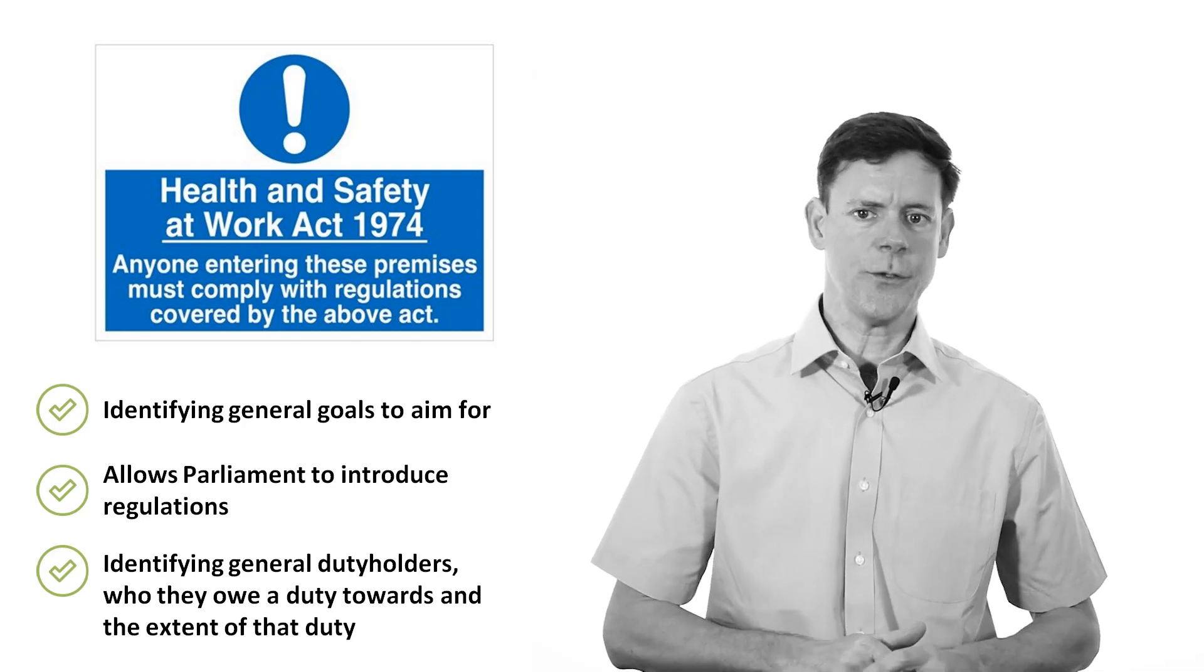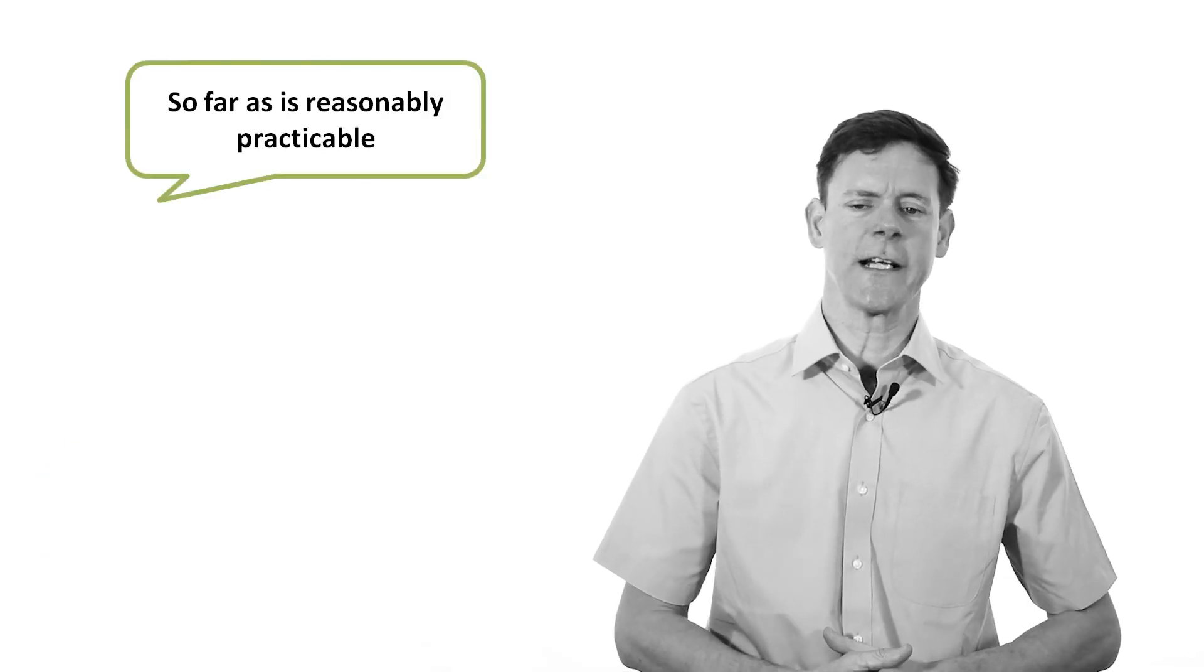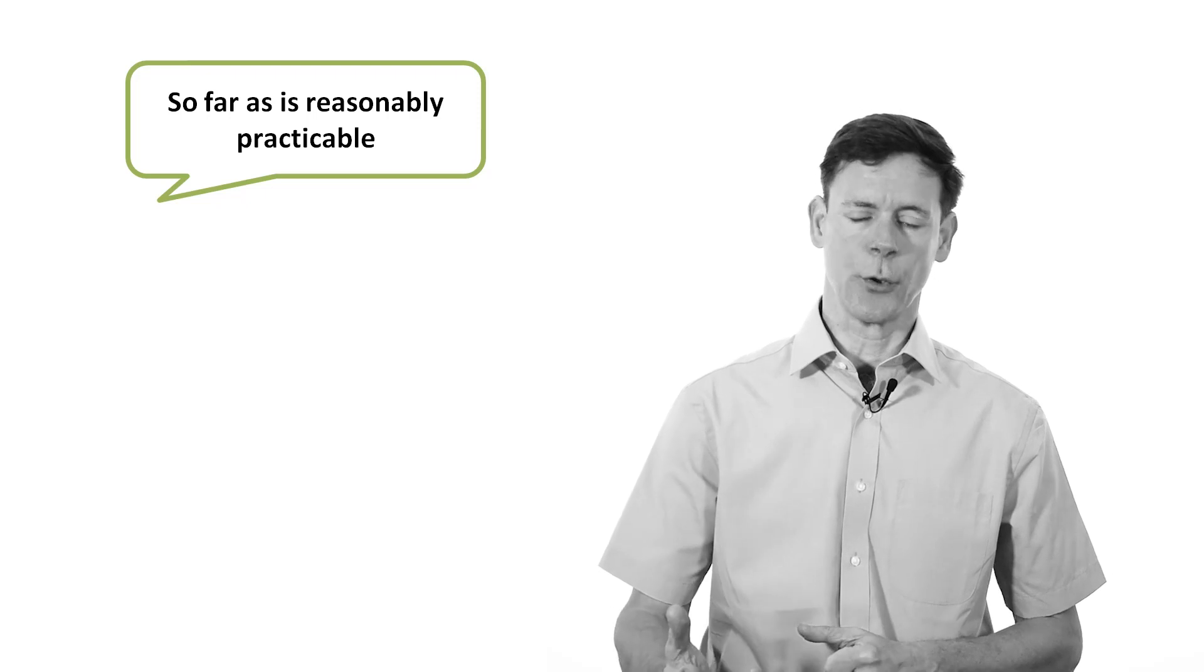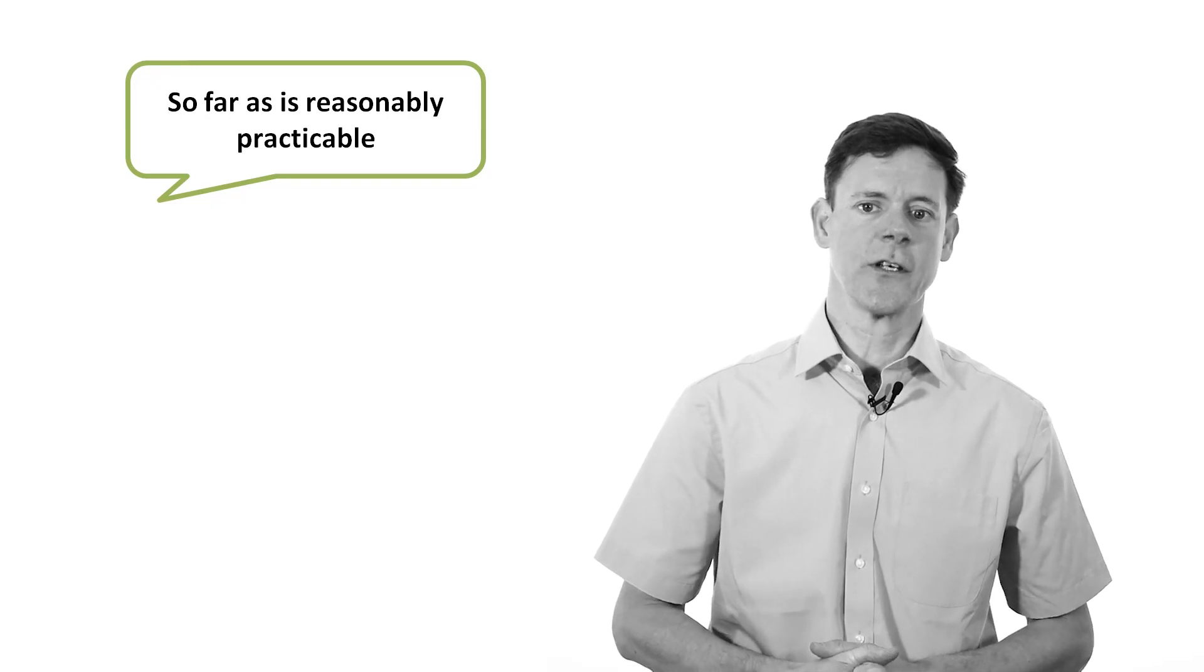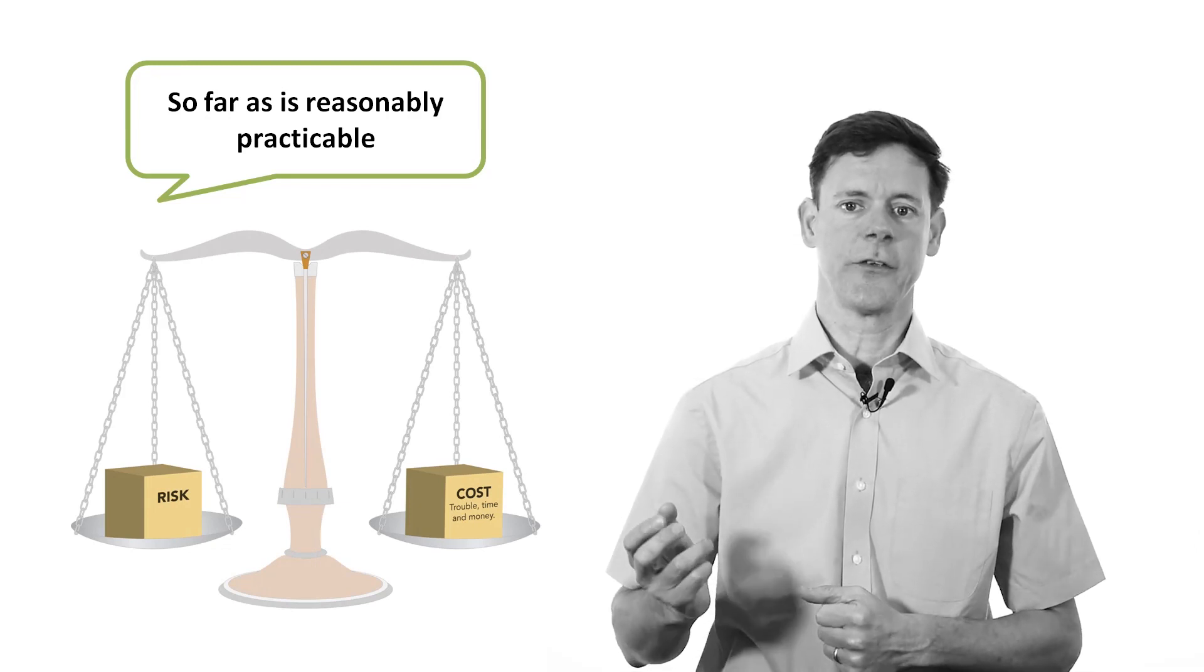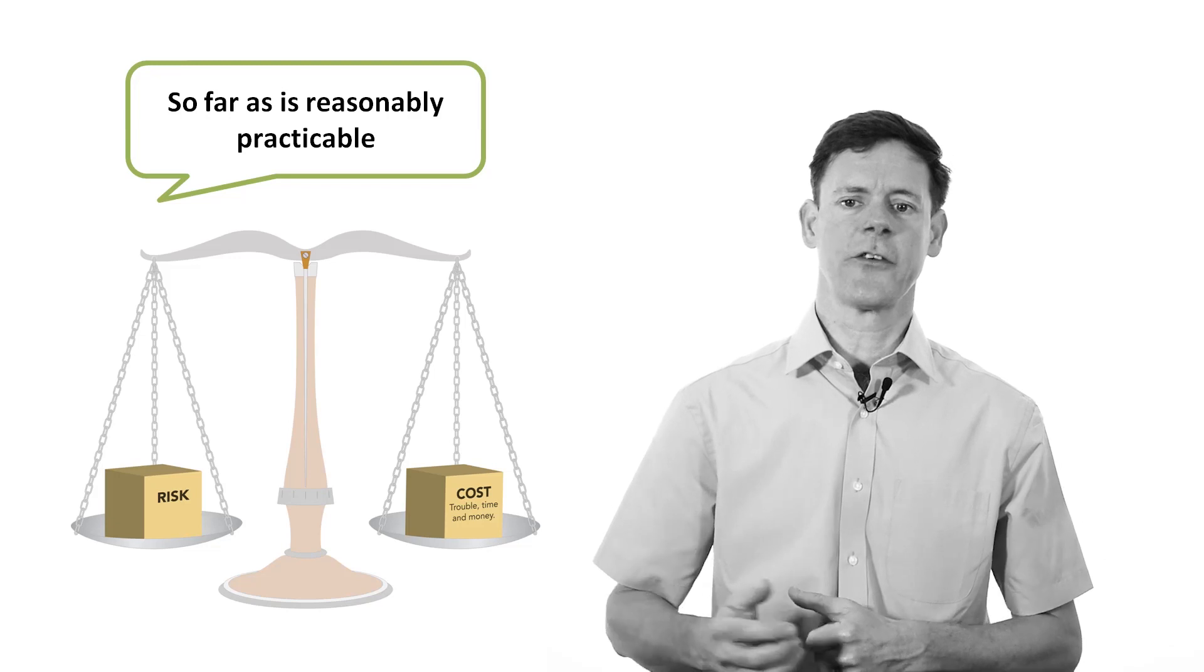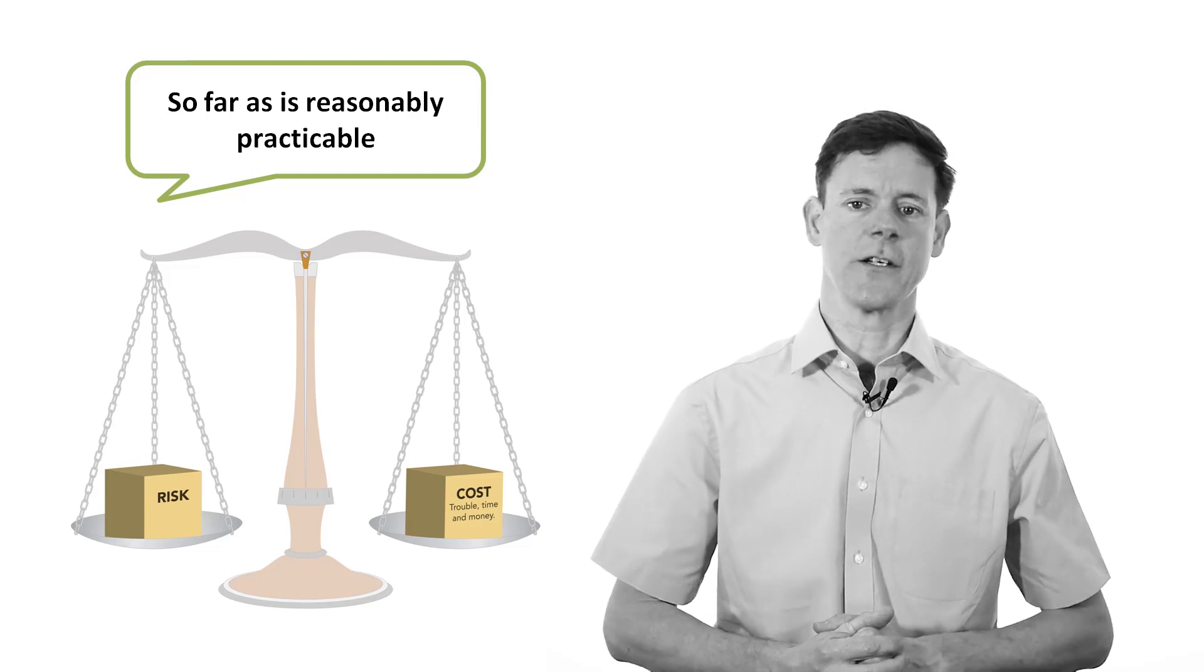For example, one of the key duty holders identified is the employer, and the employer is told that they have a duty to ensure, so far as is reasonably practicable, the health, safety and welfare at work of his employees. So far as is reasonably practicable is a key phrase. It means that the employer has to look at the level of risk on the one hand, and they have to balance it against a sufficient sacrifice that's measured in cost, time, effort and difficulty. If the level of risk is not high, the employer is expected to make a small amount of sacrifice. If the level of risk is high, they're expected to sacrifice more in terms of money, time, effort, etc.